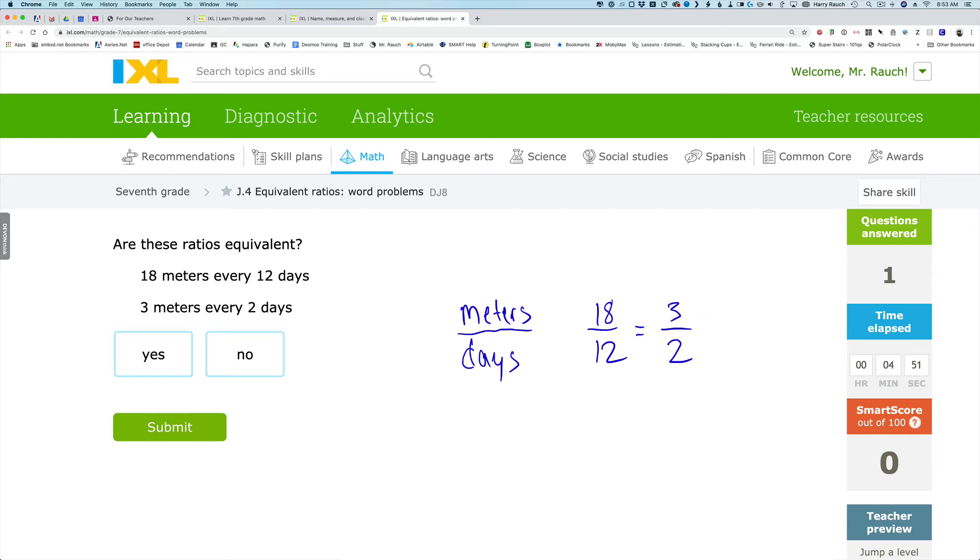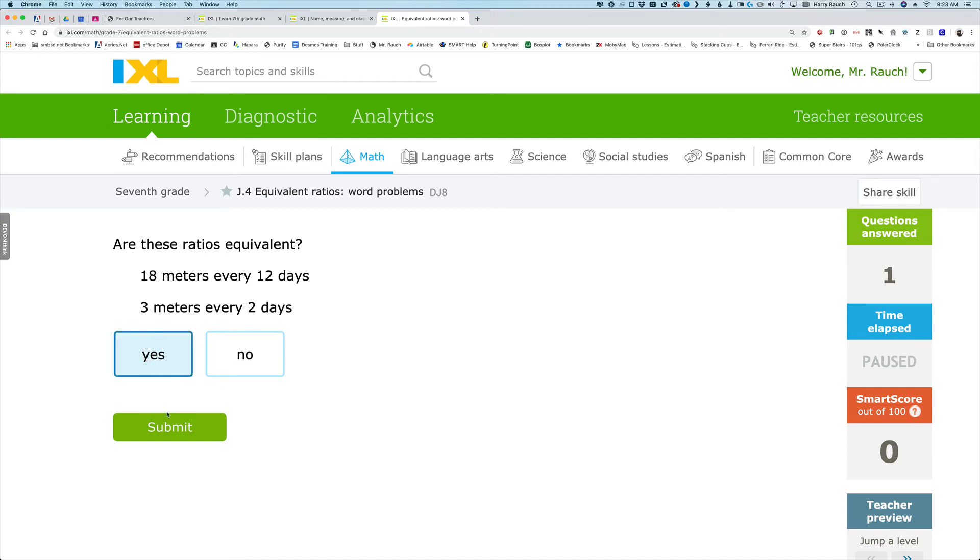Another way that we could determine their equivalence would be trying to cross multiply. Does 3 times 12 equal 18 times 2? If the cross products are equal, then the fractions are equivalent. And since 3 times 12 is 36, and 18 times 2 is also 36, then we've shown a second way that yes, these are equivalent. And since these are equivalent, I'm going to go ahead and click yes and submit.